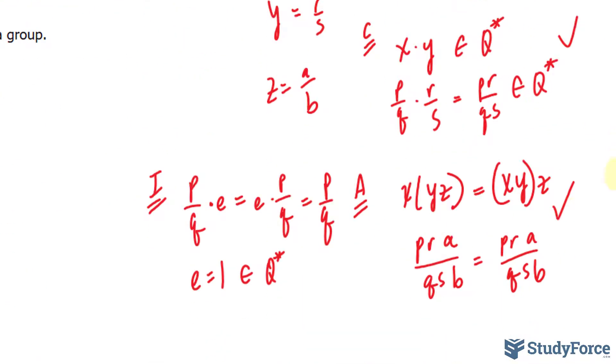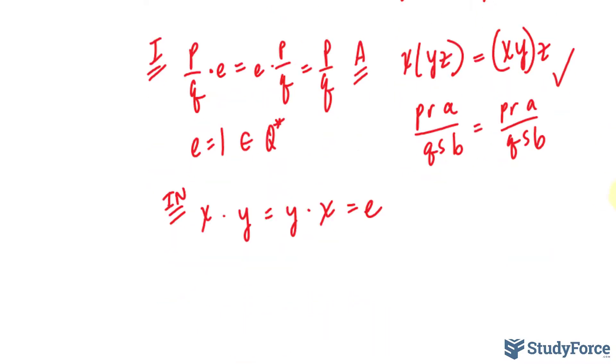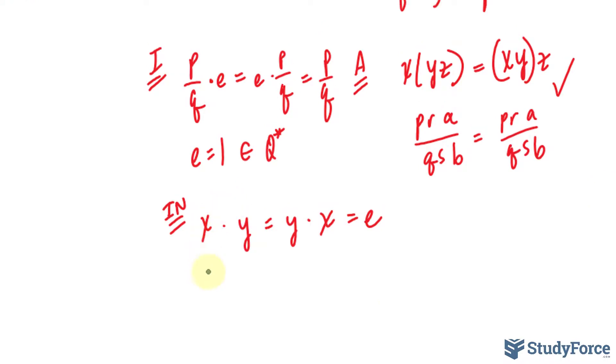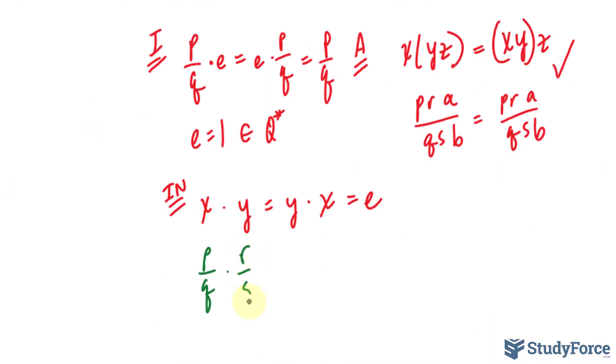And lastly, we have to show that an inverse exists. We'll use x and y. x times y equals y times x, and that should give us e. So we have p/q and y was r/s. r/s times p/q.